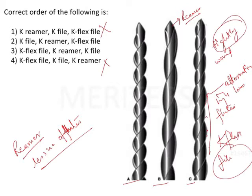Tightly wound flutes are present, and alternating high and low flutes are there. From this you can identify that this is the K flex file. These alternating high-low flutes are due to the fact that this instrument is wound from a rhomboidal or diamond-shaped blank, which produces tightly wound alternating high and low flutes. These high-low flutes make the instrument more efficient in the removal of debris.